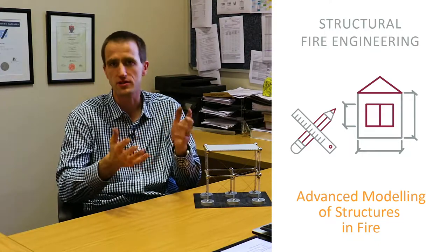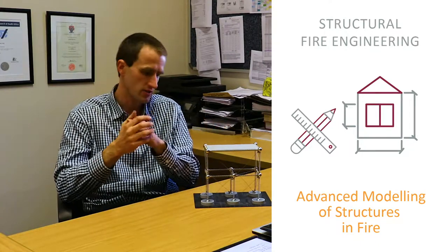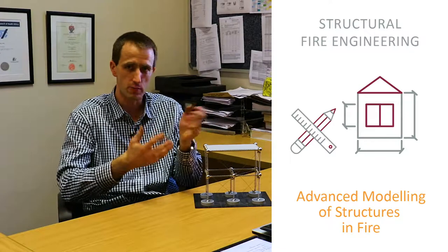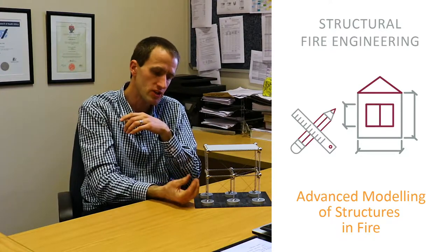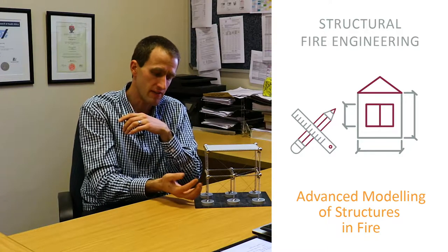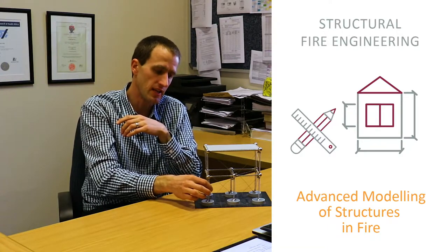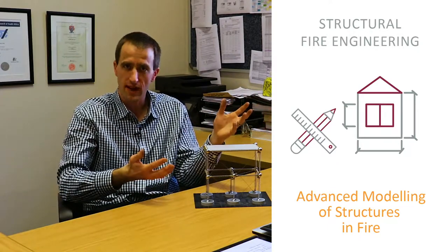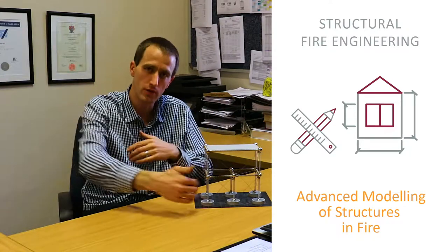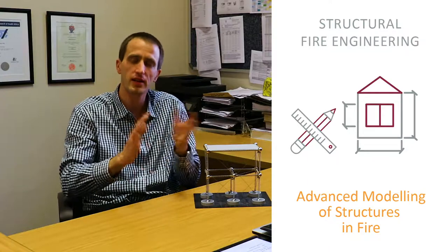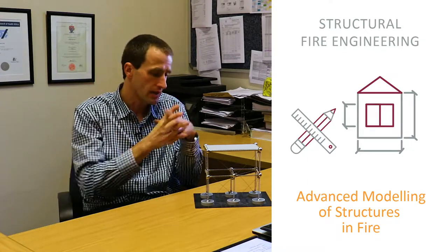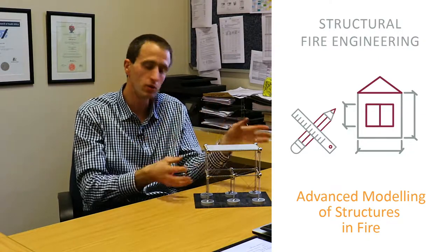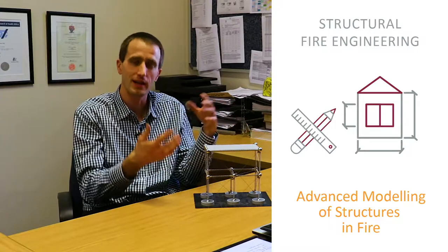There are a large variety of fire scenarios you could consider. For instance, if I was designing this structure, I could use a localized fire — especially if it's a petrochemical facility with a fuel leak — a localized fire adjacent to the structure could be quite a governing factor for design. Then I could have a traveling fire, perhaps in a large building where flashover doesn't occur, moving through the building progressively and affecting different parts at different times. I could also have computational fluid dynamic models modeling the ventilation, fuel, and other factors inside.